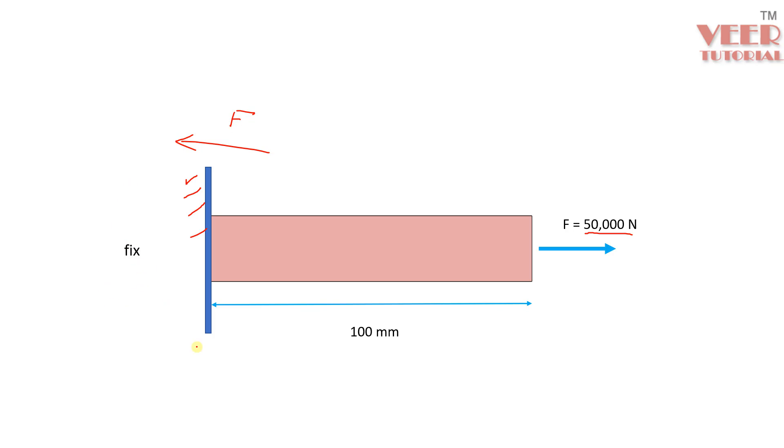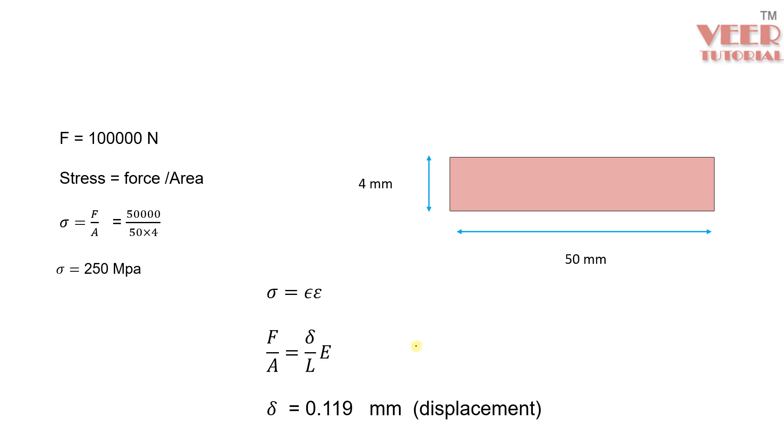So now we are going to fix it. We are going to apply this value of length. So first let me do some hand calculations of this. If you do the hand calculation in this type of problem, the value of this force is basically 50,000 Newton here. And when we apply the formula stress equal to force divided by area, you can see the cross sectional area will be 50 x 4. So this value will be 250 MPa.